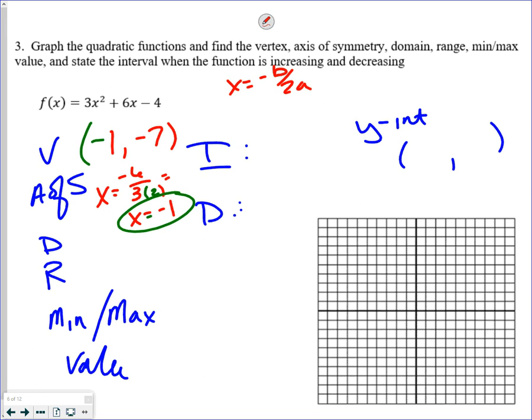So negative 1, negative 7. 1, 2, 3, 4, 5, 6, 7. Using my counting principle, over 1, up 3. Over 2, up 12. 8, 9, 10, 11, 12. Right there. So there's the picture. Again, graphing calculators, x, y charts, counting methods, those are all good methods to graph. Now let's answer some questions.